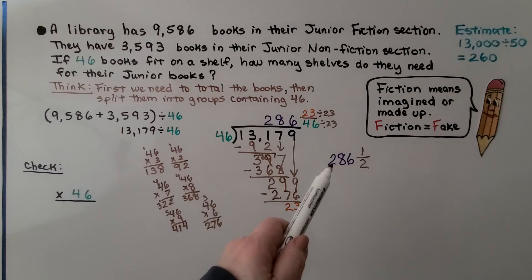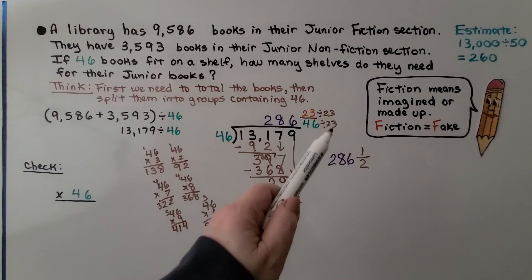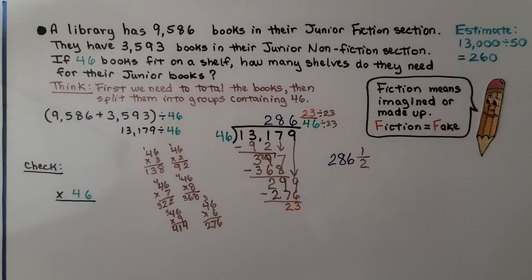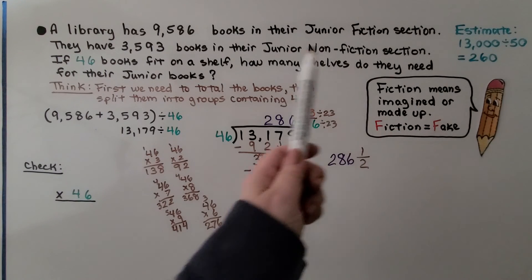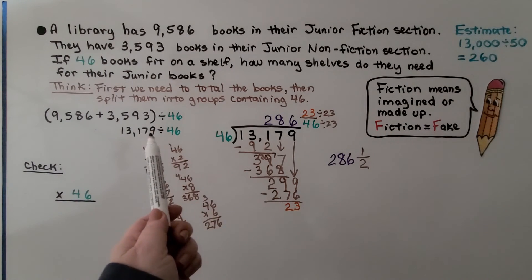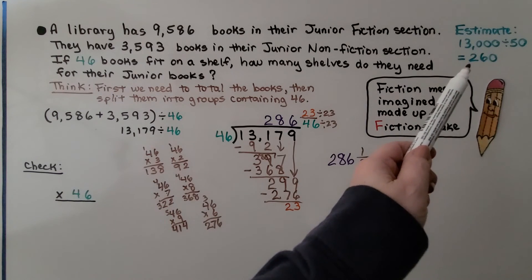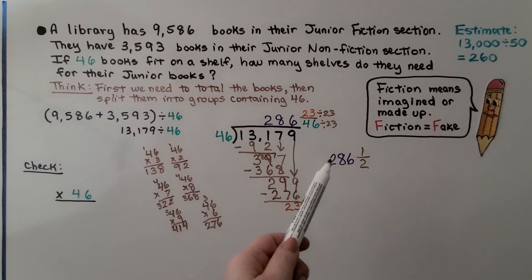286 and a half shelves for these books. There's 286 full shelves and there's another shelf that's only got 23 on it, so that's going to be half full. If we had estimated this, we could estimate this as 13,000 divided by 50, and that would have been about 260, which is close to our quotient. So it's reasonable.